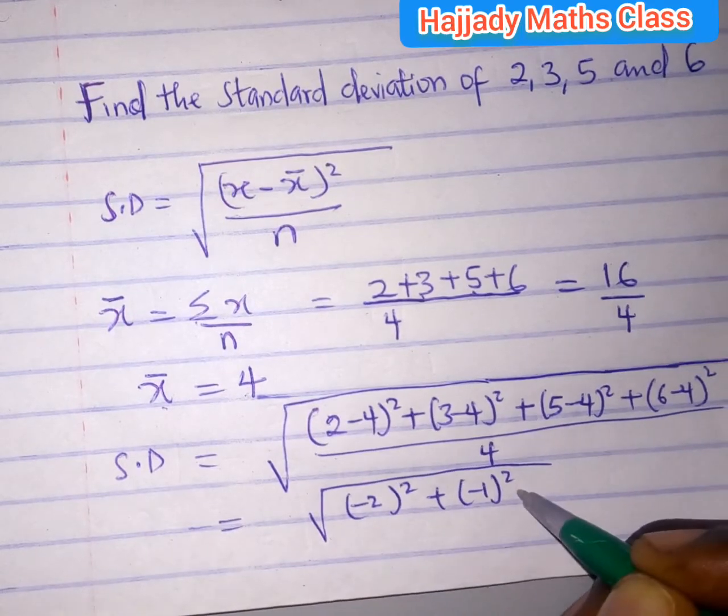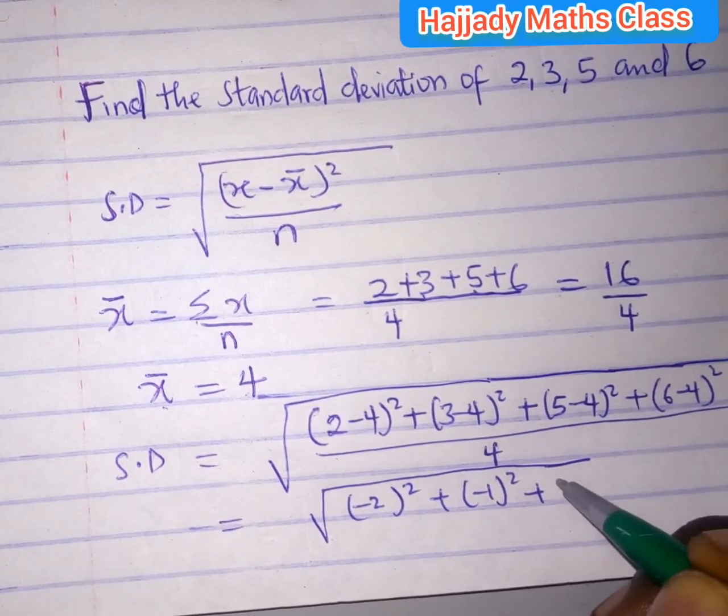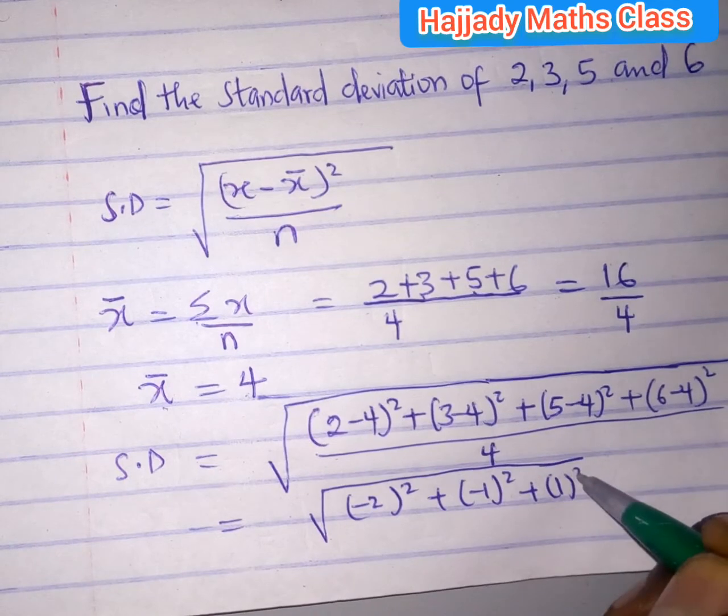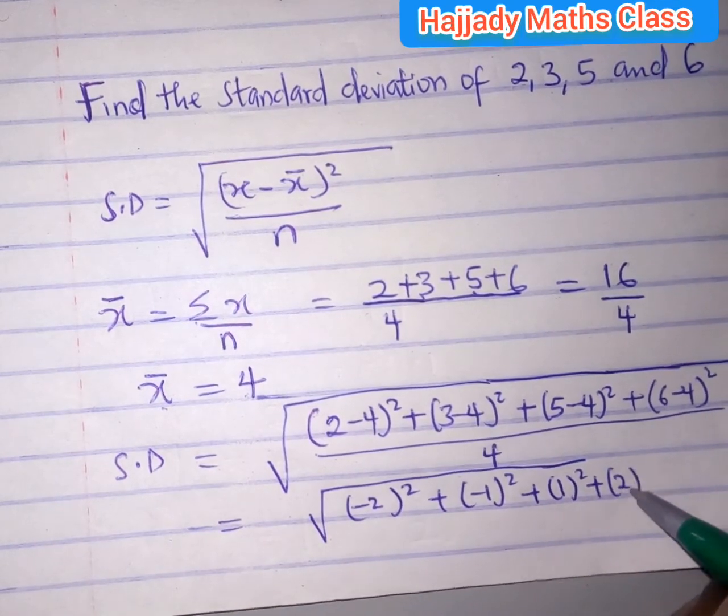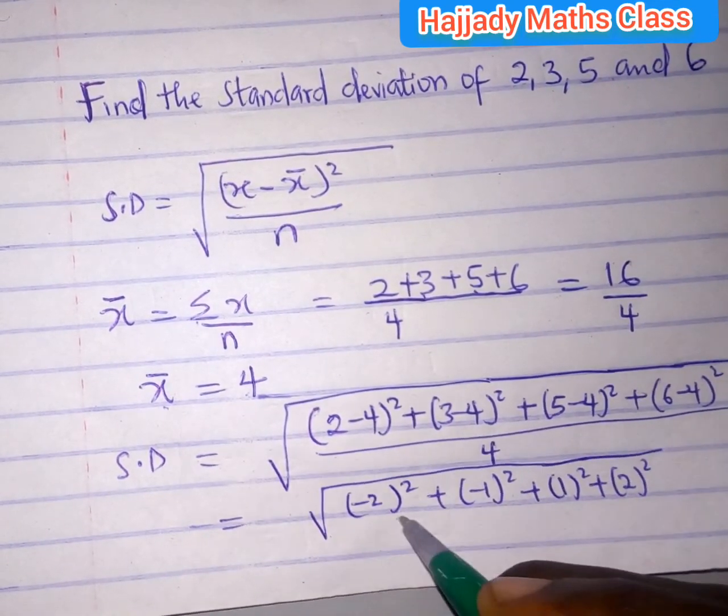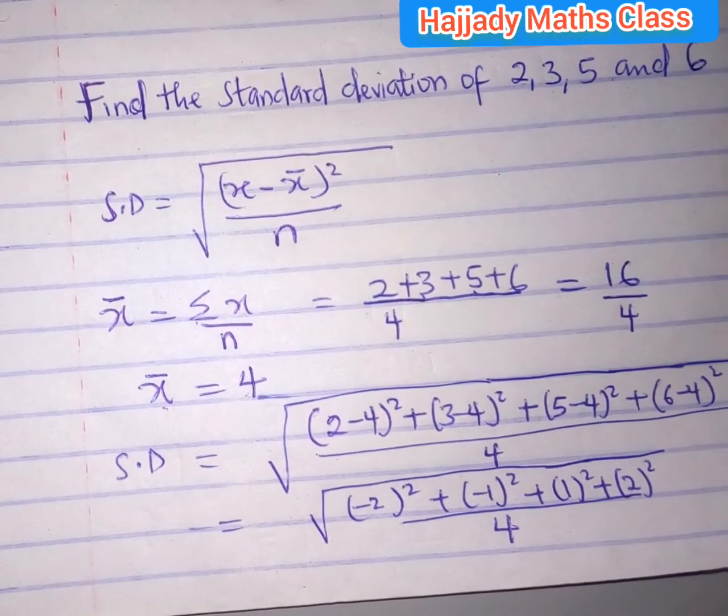So here we have (minus 2) squared gives 4, plus 1, plus 1, plus 4, all over 4.